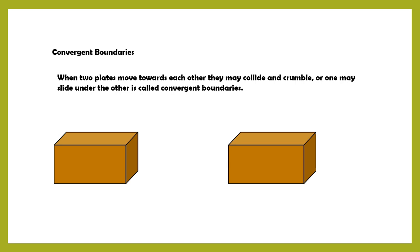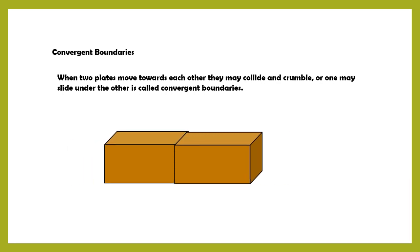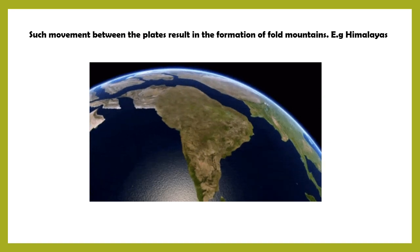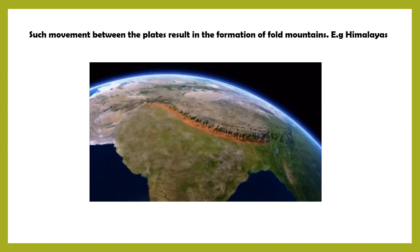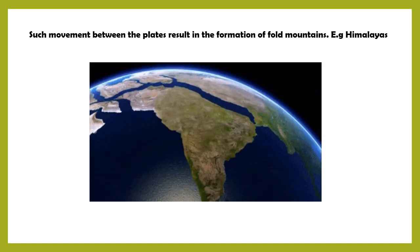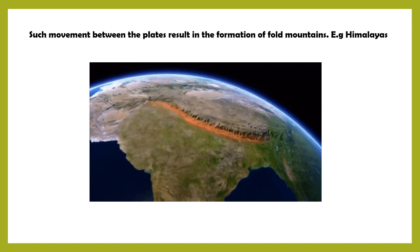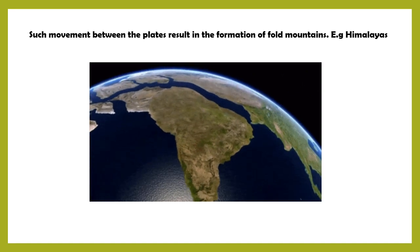Between the plates, three types of movement are possible. The first is convergent boundaries — when two plates move towards each other, they collide and crumble, or one may slide under the other. Such movement between the plates resulted in the formation of fold mountains. For example, the Indian peninsular plate collided with the much larger Eurasian plate, which resulted in the formation of the Himalayan mountains.